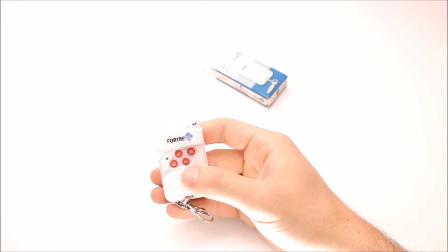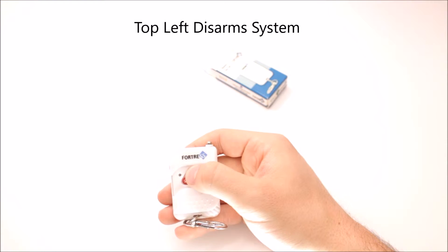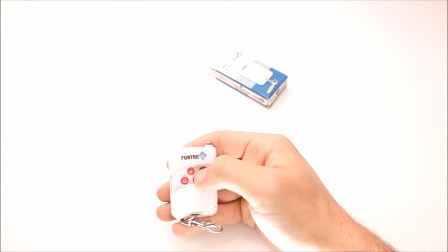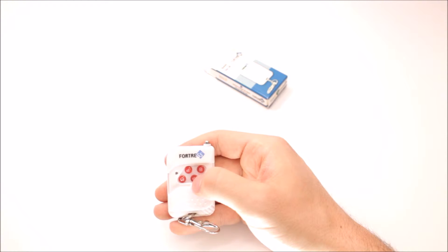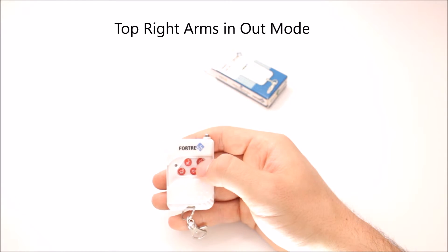Now we'll go over what each button does again here. Top left hand button will disarm the system. And as you can see, every time that you press a button, you'll see that red LED light light up. On top right is the out arming button.